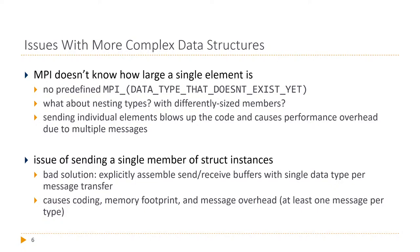What about nesting types? Say a particle has two sub-structs — one for position and one for velocity, both with x, y, z values. And what about differently sized members: integers at four bytes versus doubles at eight bytes? You could simply send individual messages — for example, transmit four doubles in one send and one integer in a second — and repeat this for n instances of the struct. But this is a really bad idea: the code blows up, you have overhead in the number of messages, and if you change the struct you need to update all your send operations.